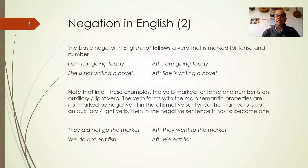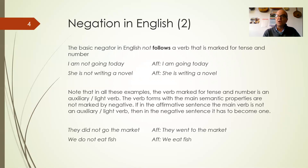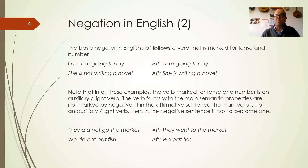The basic construction in English is this: the negator 'not' follows the verb that is marked for tense and aspect. So 'I am going today' is the affirmative sentence; 'I am not going today' is the negative sentence — you put 'not' after the part marked for tense and aspect. 'She is writing a novel'; 'she is not writing a novel.' In these examples, the verb marked for tense and aspect is an auxiliary or like-verb — an 'is' or 'am' form, a form of the 'be' verb. In English, negation is always marked on an auxiliary or like-verb.